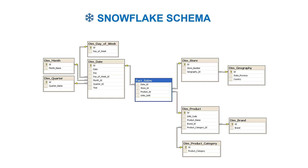What the snowflake schema does is kind of break that down even further — it further normalizes the star schema. It takes those dimensions and normalizes them further. There's a separate video on database normalization that will talk more about that.